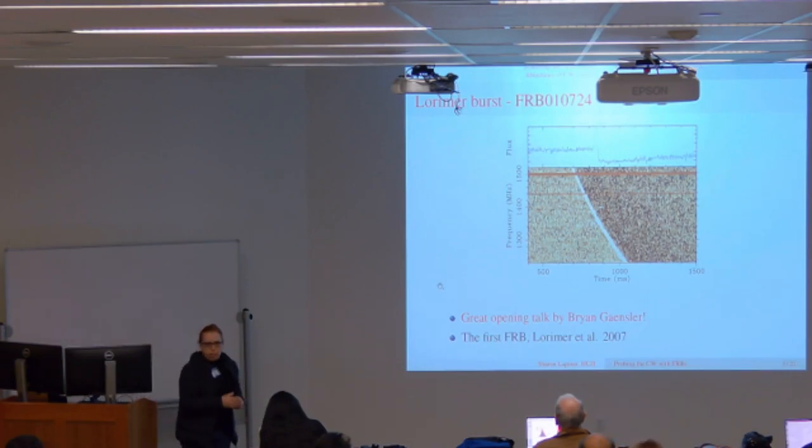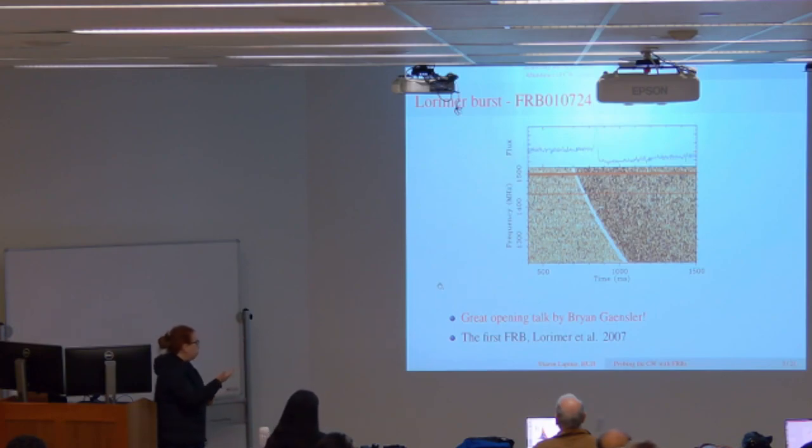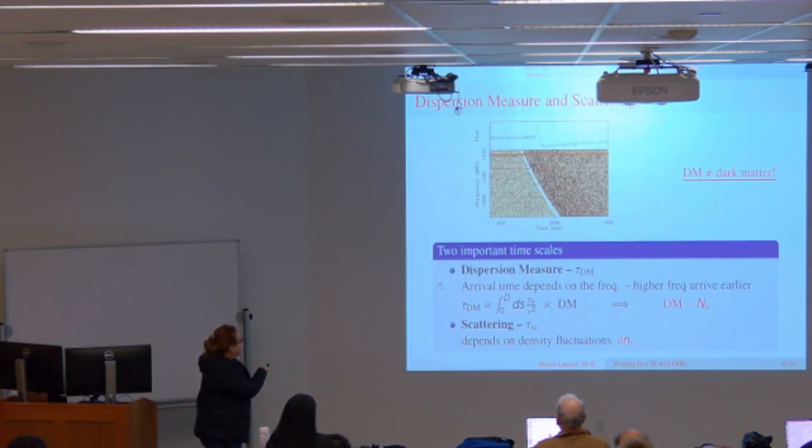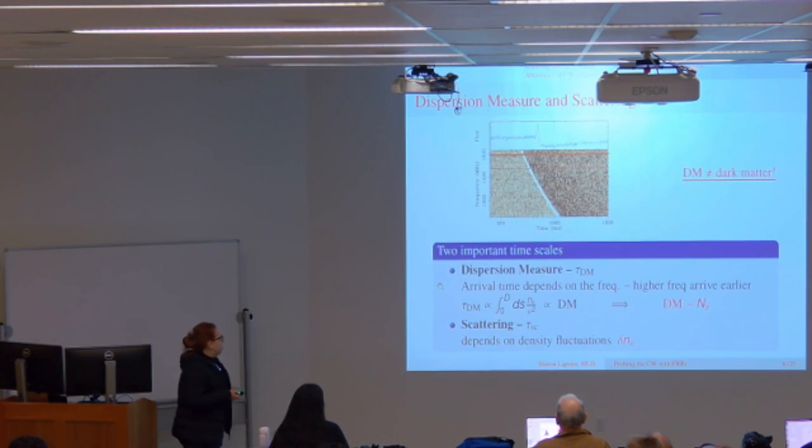So you all know this plot, I guess you remember it from the very first workshop. What we see here is the first FRB detected in 2007 by CHIME. There are two important time scales you can get from this: one is the delay time, where you see that high frequency arrives earlier than low frequency, and this is related to the dispersion measure. The other important time scale is the scattering time scale, which has to do with the width of the signal.